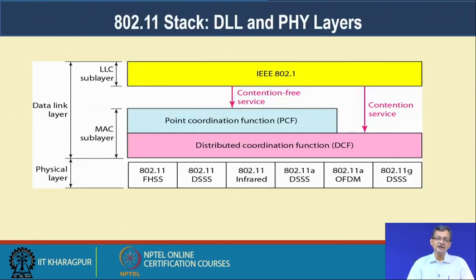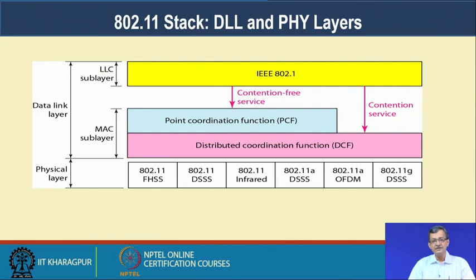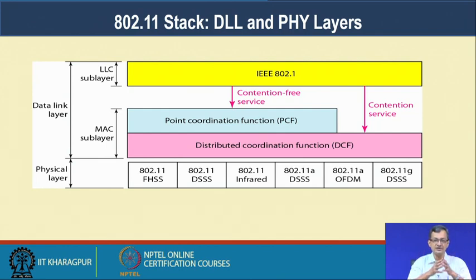Looking at the physical and data link layer structure of the whole stack: at the bottom there are several physical layer standards. Above that is the Distributed Coordination Function (DCF), and above that the Point Coordination Function (PCF). There are issues of contention-free service and contention services, and above these is the 802.1 LLC sublayer. For WLAN or 802.11, the network and transport layers and above remain the same — whatever standards like IP are working continue in a seamless fashion.